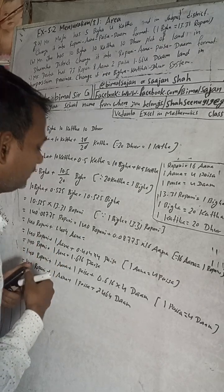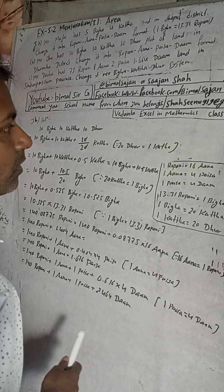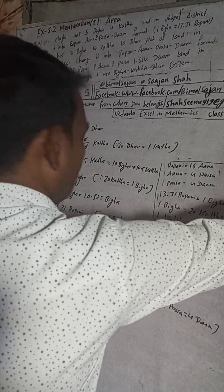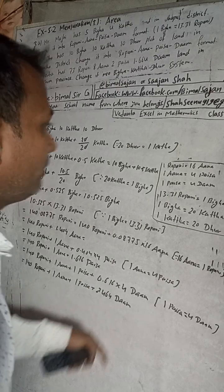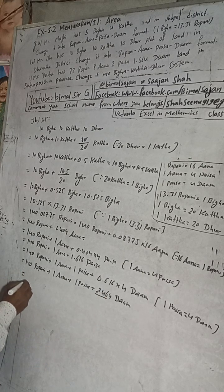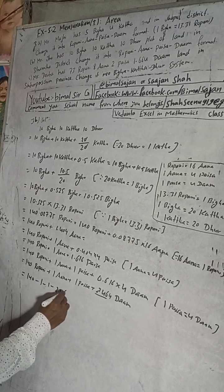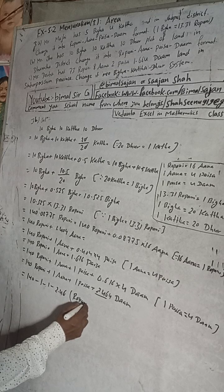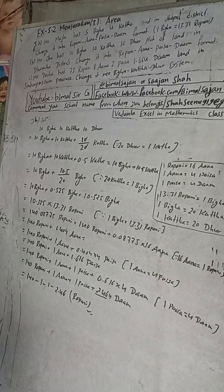So the final book answer is: 140 ropani, 1 ana, 1 paisa, and 2.46 dam. This is written as 140-1-1-2.46. They have taken only 2 decimal digits. After 6 there is 4, so no need to round up the 6 - if it was 5 or more, then 6 would become 7. So 2.46 is the correct answer.